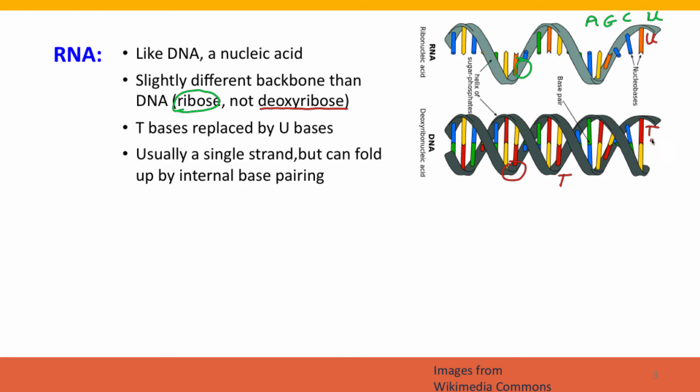U, like T, pairs with A. So if this RNA were to form base pairs, the U would be paired with an A.